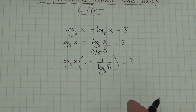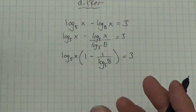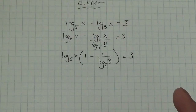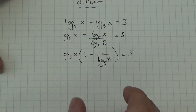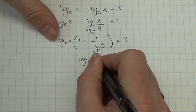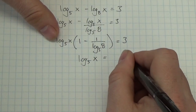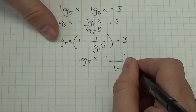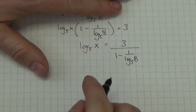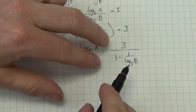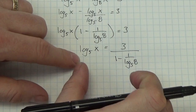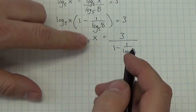Now I'm fairly close to getting an answer. At this point, I'm going to isolate the factor that has the x in it by dividing, so this becomes 3 divided by 1 minus 1 over log base 5 of 8. Now that I've got log base 5 of x equal to this, to get x out I just convert to exponential form — the base of the logarithm is 5, so the base of the power is 5.